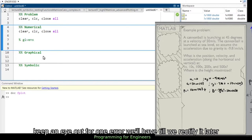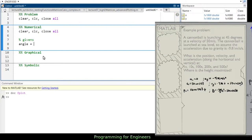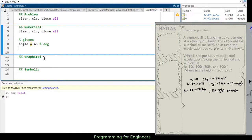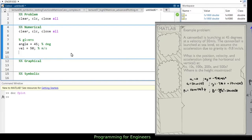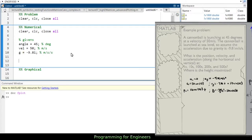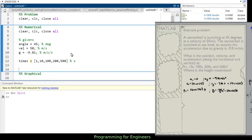So with my numerical, following my numerical, let's just start with what we know, the givens. The ones that I'm given here are angle is 45 degrees, velocity is 50 meters per second, and then g is negative 9.81 meters per second squared.